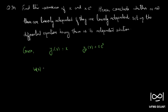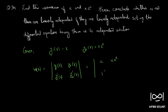Our Wronskian is defined as the determinant: y1(x), y2(x); y1'(x), y2'(x). This becomes x, xe^x; 1, xe^x + e^x. Expanding, this becomes x²e^x + xe^x - xe^x, which becomes x²e^x. We have our Wronskian as x²e^x.